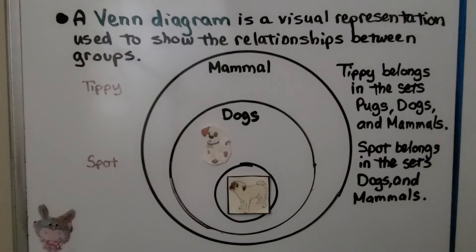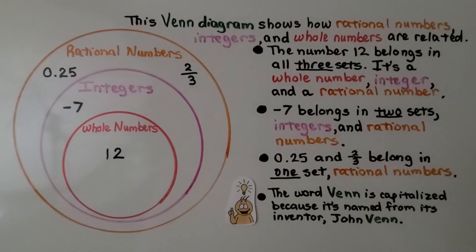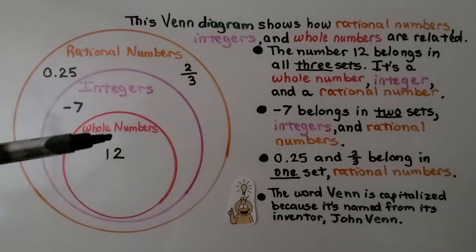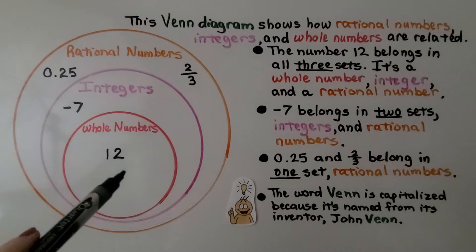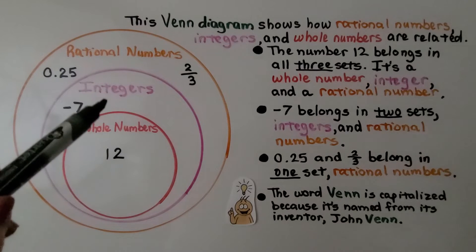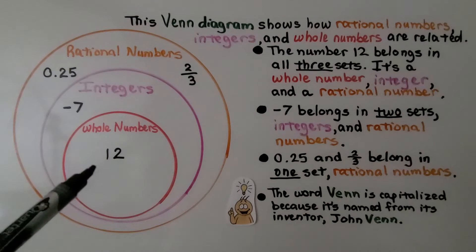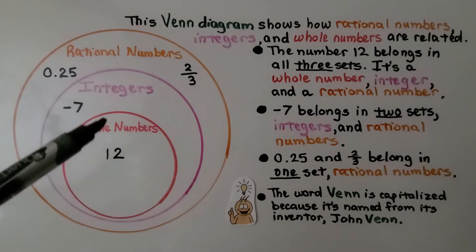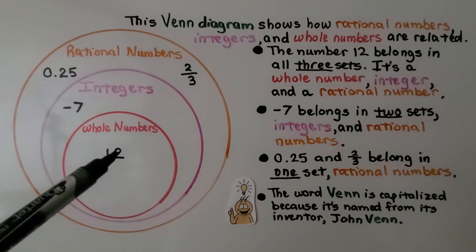We can use a Venn diagram to help us classify and sort numbers. This Venn diagram shows how rational numbers, integers, and whole numbers are related. The number 12 belongs in all three sets — notice the whole numbers are inside the integers, and integers are inside rational numbers, so 12 is a whole number, integer, and rational number.